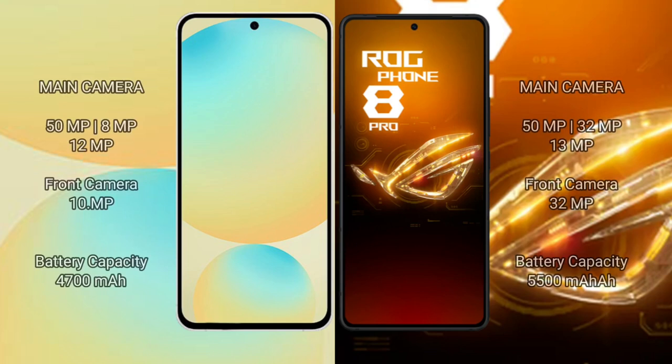Samsung Galaxy S24 FE has a triple rear camera setup: 50MP plus 8MP plus 12MP, with a 10MP front camera. ASUS ROG Phone 8 Pro has a triple rear camera setup: 50MP plus 32MP plus 13MP, with a 32MP front camera.